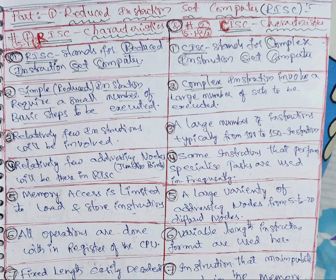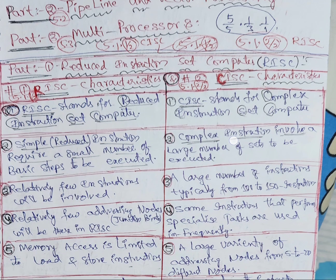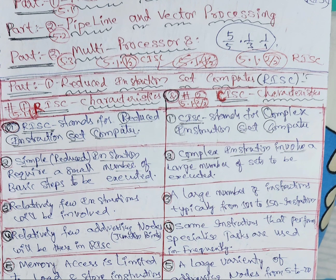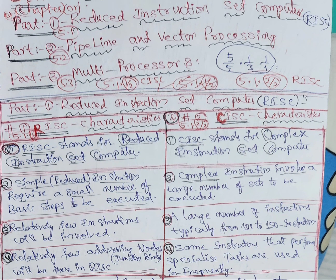In last year question papers, he is asking: explain about RISC architecture and its characteristics. Same like: explain about CISC architecture and its characteristics — these are asked separately. Now we are going to see the architecture. This topic is from the fifth unit, first chapter of Computer Organization and Architecture.